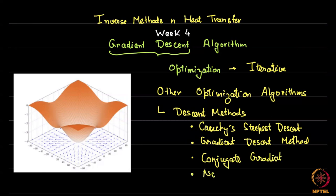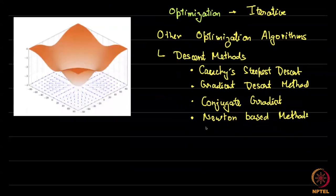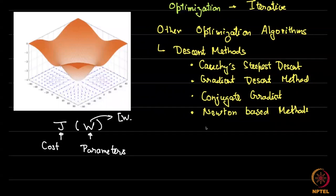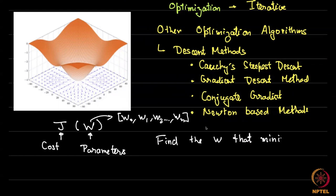Then there are Newton methods, one of which we will cover. The idea is this: you have some function J, which is a function of w. This is the cost or objective, and w is the parameter or set of parameters — w could be made up of w0, w1, w2, up to wn. What you want to do is find the w that minimizes J.